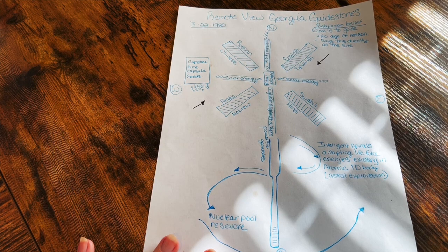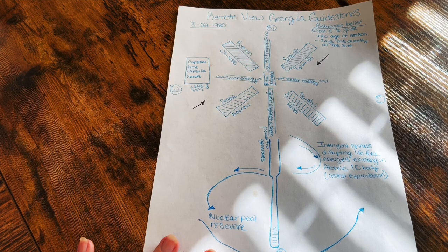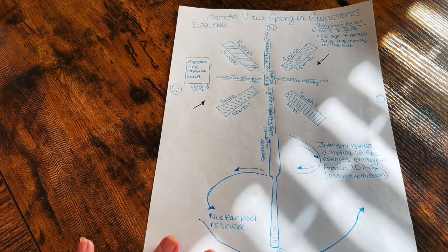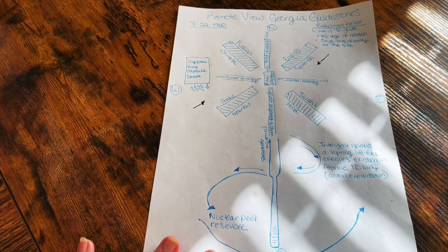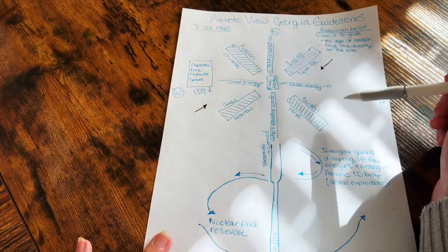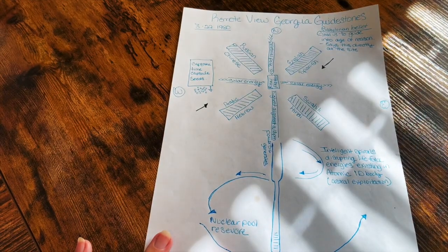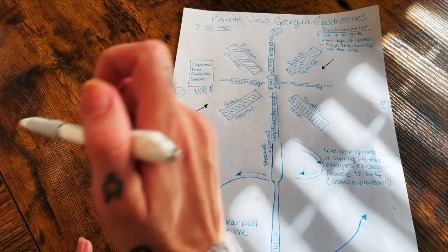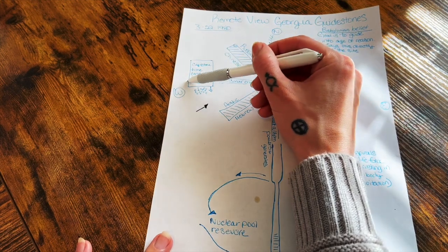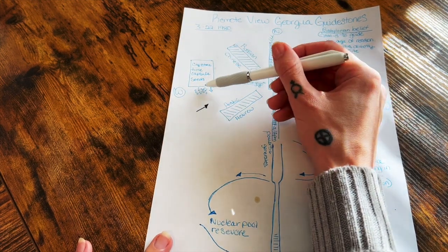It's all about the distortions that they're running, trying to break up and scatter and fragment universal laws. A lot of the silica technology is happening here at the Georgia Guidestones. Here is the time capsule seeds that are off to the left side.